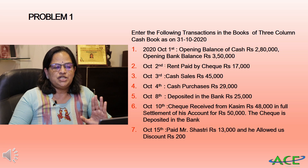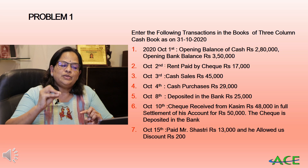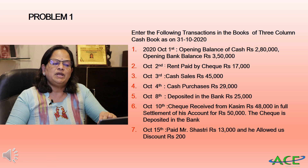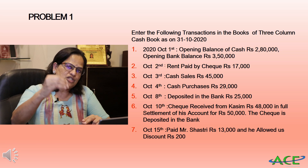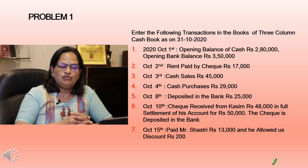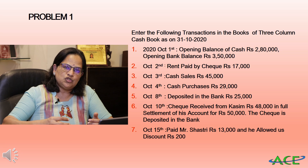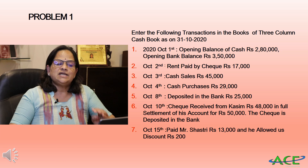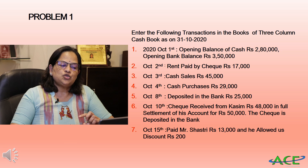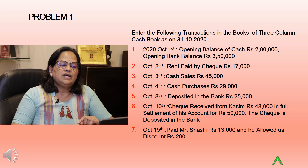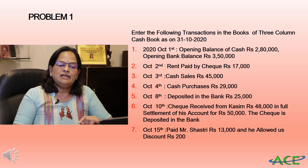First transaction — October 1st: opening balance of cash is rupees 2,80,000 and opening balance of bank is rupees 3,50,000. We record these as the first entries, then record transactions for the month of October, and when we balance, we get the closing balance to carry forward to November. October 2nd: rent paid by check rupees 17,000. October 3rd: cash sales rupees 45,000. October 5th: cash purchases rupees 29,000. October 8th: deposited in the bank rupees 25,000.